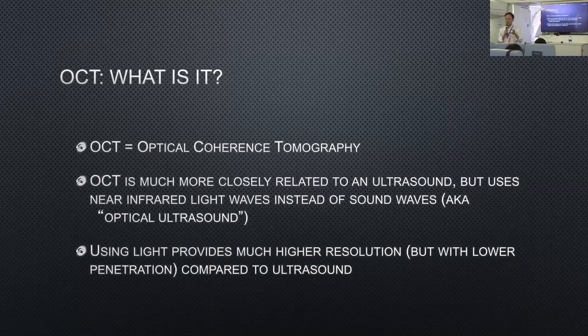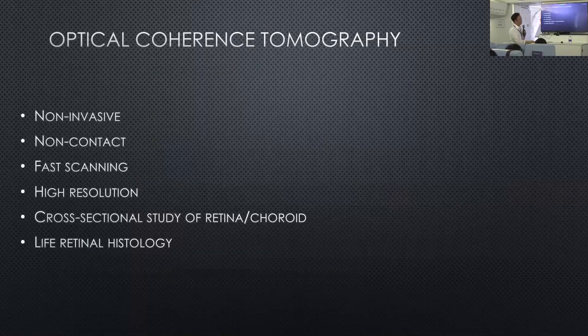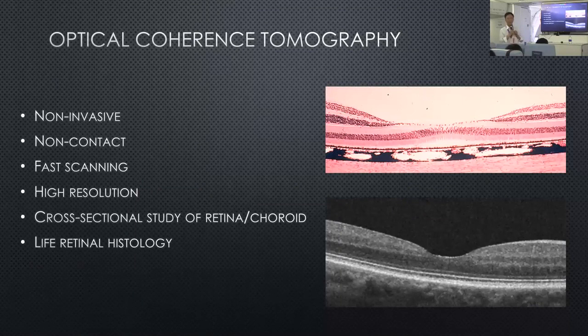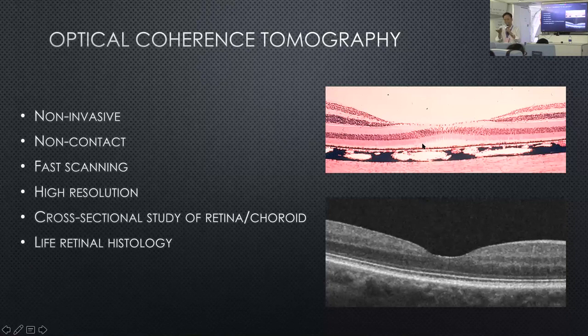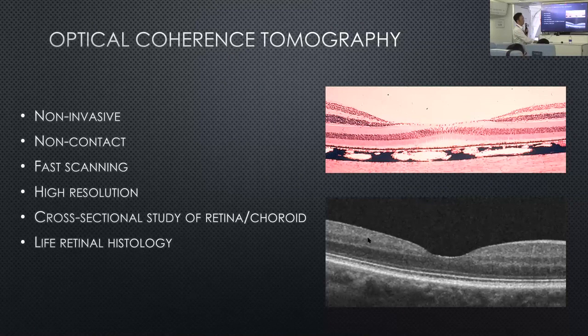OCT uses light to create a cross-sectional image of the retina. You get a picture like here — this is an OCT picture alongside a histology of the macula, making it easy to interpret the different structures in the retina.